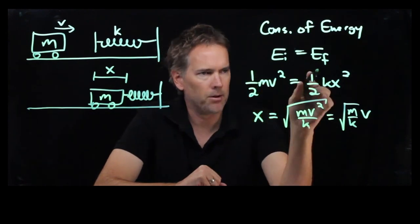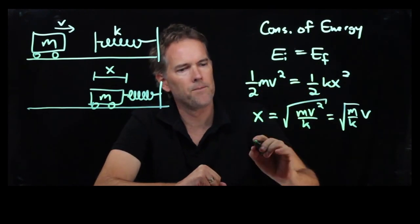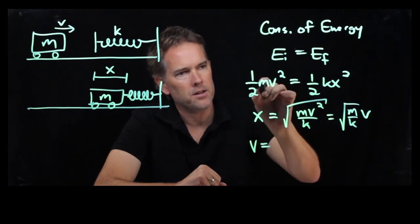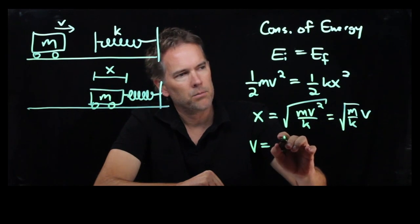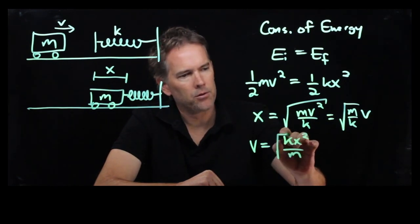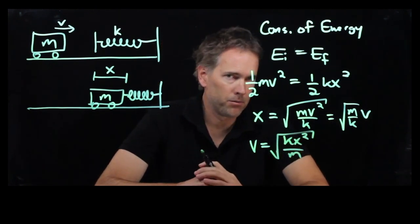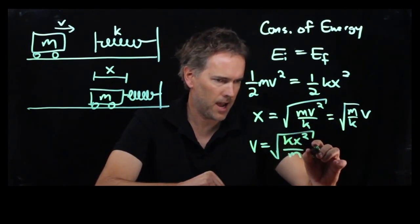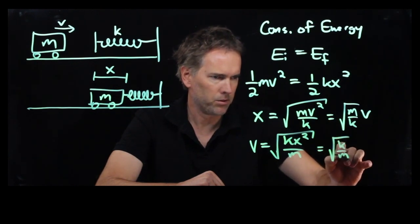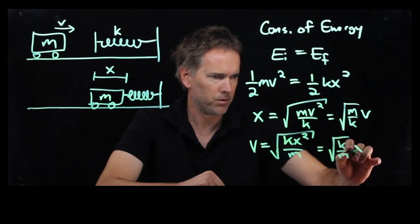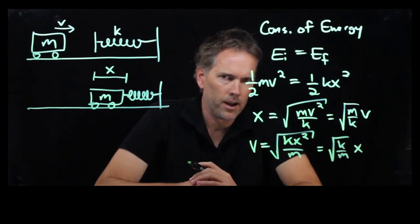Again, we have a half on both sides, so we can multiply by two and cross those out. We're going to need to divide by m in this case. And you can probably guess what we're going to get: kx squared over m, all of that square rooted. Once again, the x comes out of the equation. And so this becomes k over m times x.